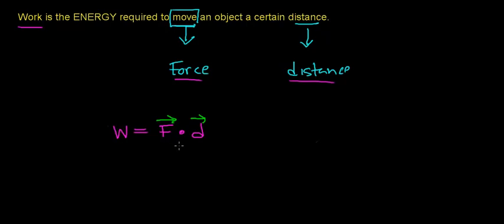If you explore this definition in more detail, you would learn that work is really calculated using the dot product of the force and displacement vectors, because only when the force acts in the direction that the object moves does the force do work on the object. For the purposes of this video, we are only going to consider the force acting in the same direction it causes the object to move, so that work equals force times the distance over which that force is applied.